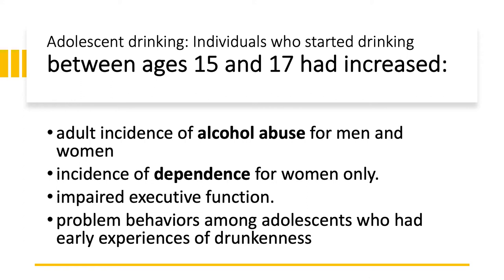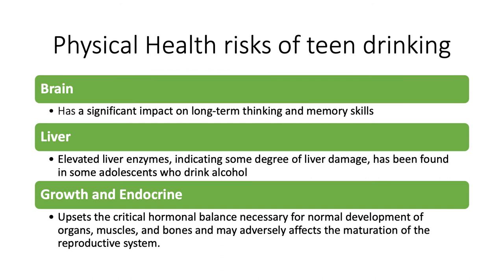If you start drinking between ages 15 and 17, you have an increased incidence of adult alcohol abuse for both men and women, and an increased incidence of dependence for women only. Dependence is a change in the chemistry of the brain accompanied by craving for alcohol and the inability to control the amount consumed, along with continued use despite repeated problems. Teen drinking affects the brain, impairing long-term thinking and memory skills, elevates liver enzymes indicating liver damage, and may upset the critical hormonal balance necessary for normal development of organs, muscles, and bones.